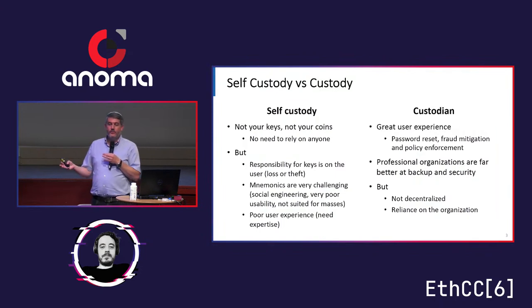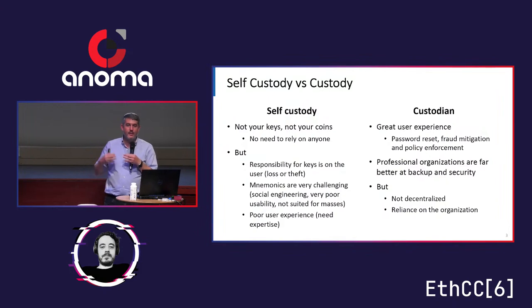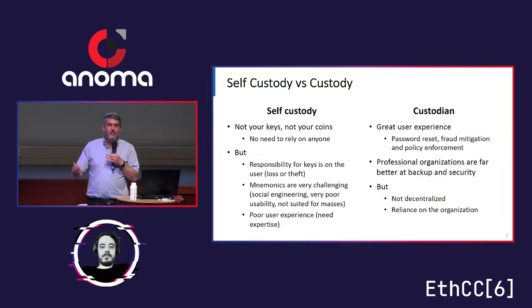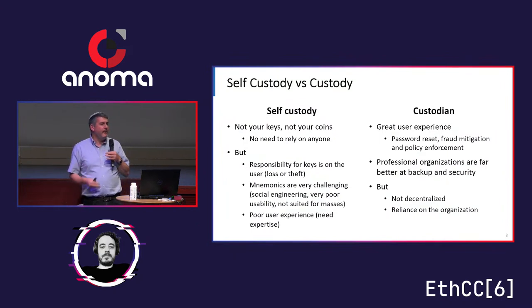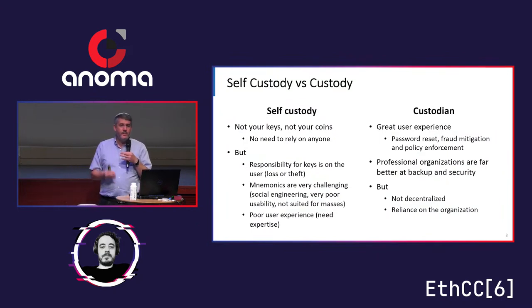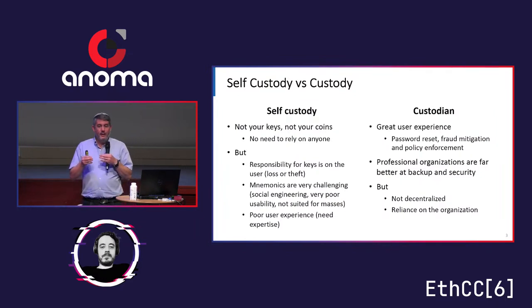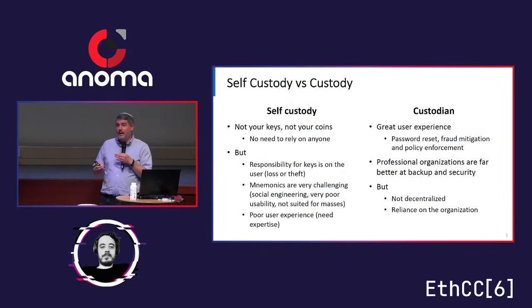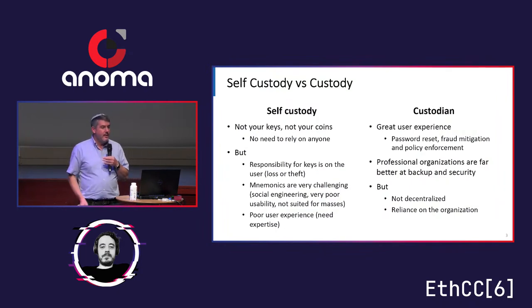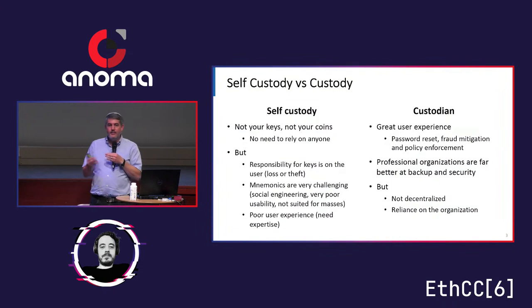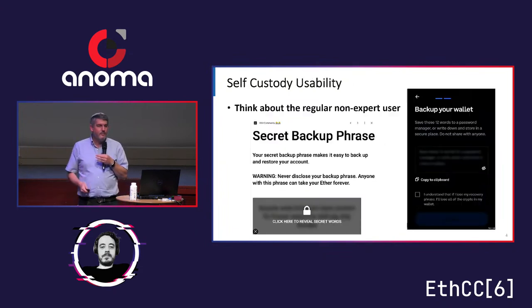On the other hand, a custodial solution has great user experience. If I forget my password, I can go to my custodian, just like my bank, and ask them to reset my password. They can deploy fraud mitigation and policy enforcement on their side which cannot be bypassed. And in general, they're much better at securing keys and digital assets than the average user — probably better than even expert users. But it's not decentralized, and you have to rely on them, and this whole field is about decentralization. So how can we solve this dilemma?